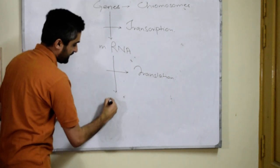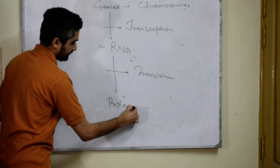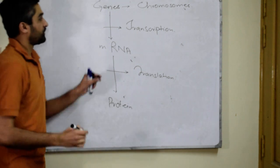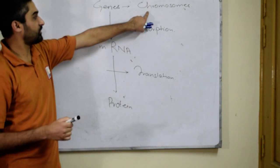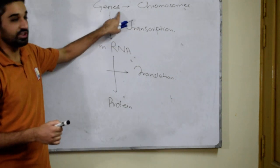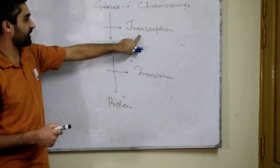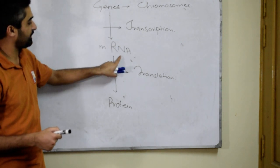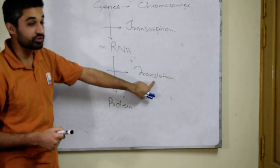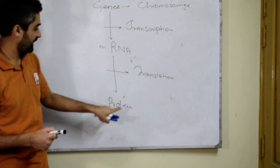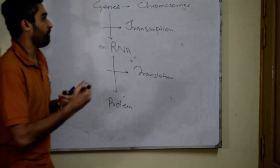After the process of translation, a protein is synthesized. So on these chromosomes, genes are present. By the process of transcription, messenger RNA is formed, and by the process of translation, protein synthesis takes place.